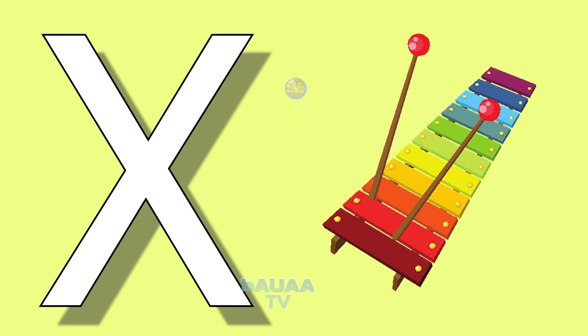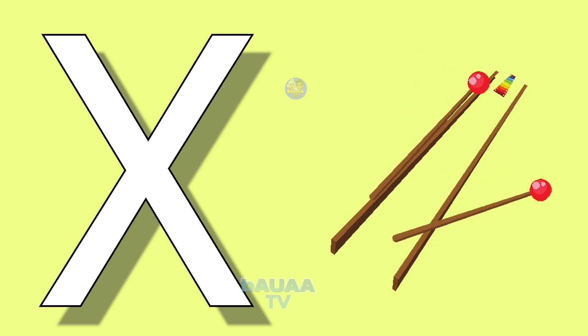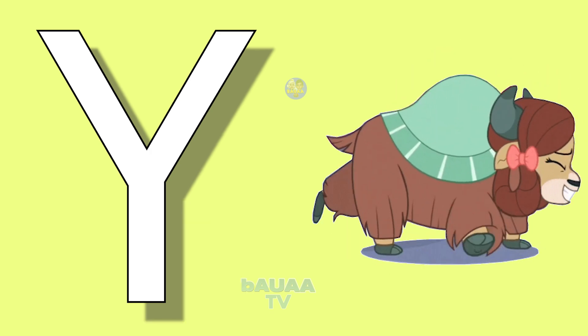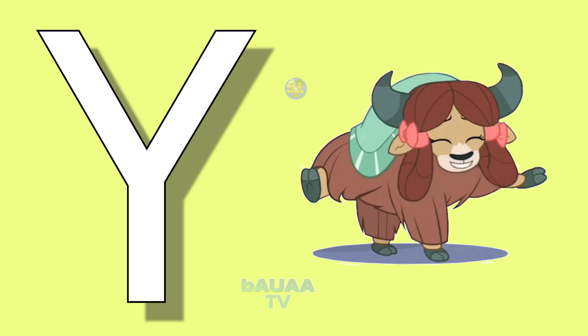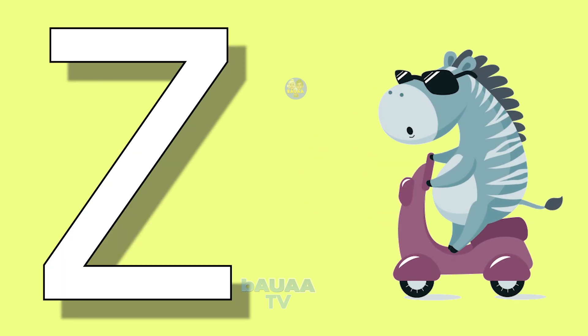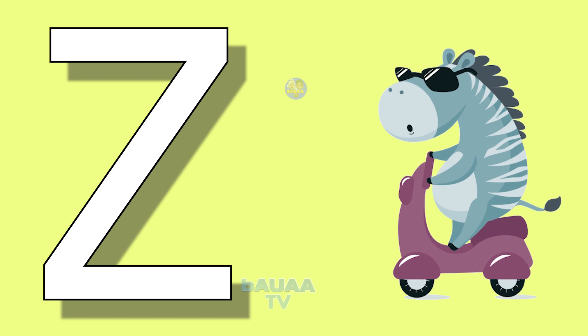X for xylophone, xylophone means swartarang. Y for yak, yak means yak. Z for zebra, zebra means zebra.